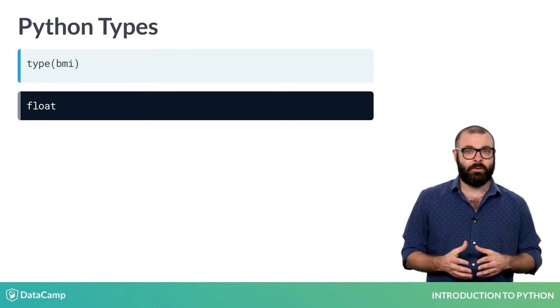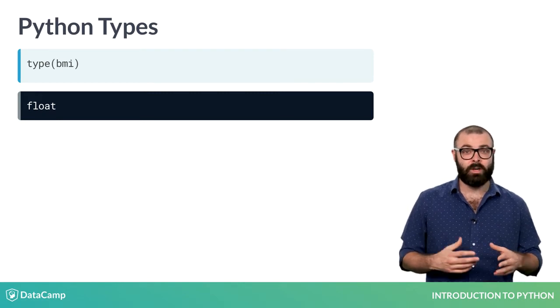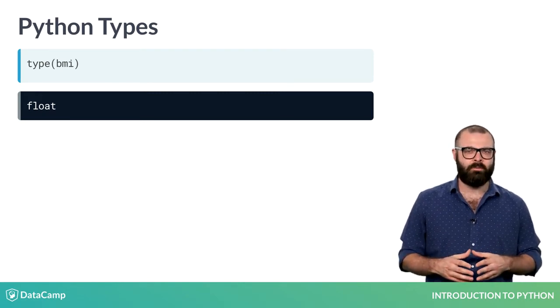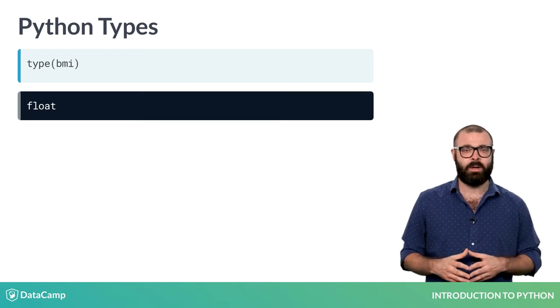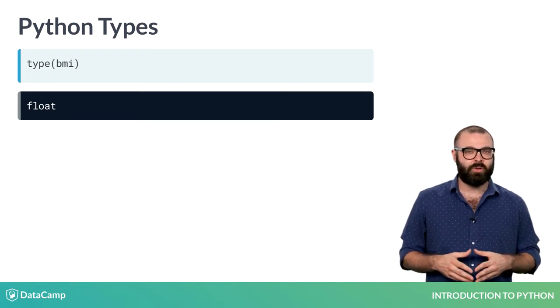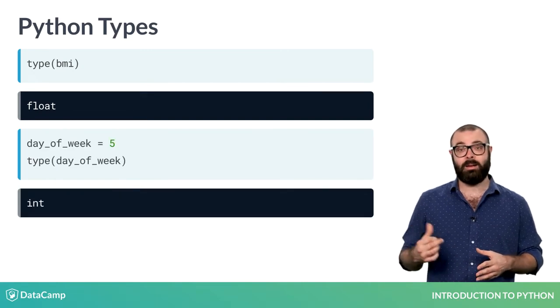You can see that it's a float, which is Python's way of representing a real number. So a number which can have both an integer part and a fractional part. Python also has a type for integers, int, like this example.